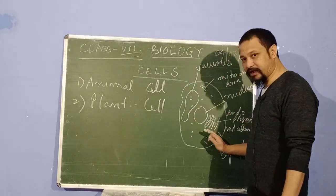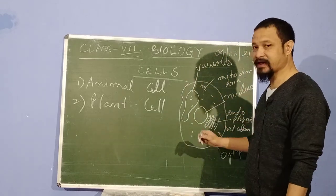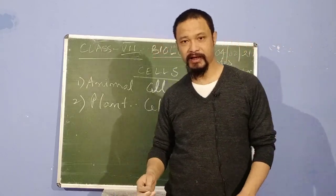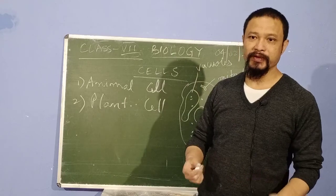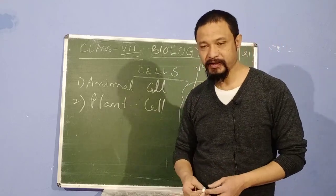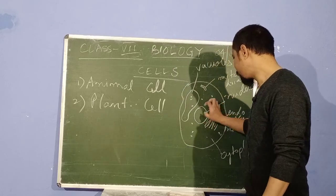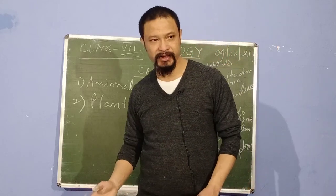What I'm trying to tell you is there are different components in a cell. These are called the cell organelles, and each and every cell organelle has its own function. They each have their own duty to do, without which a cell cannot function. The cell cannot work. The nucleus is the controlling center with nucleolus inside and genetic material.